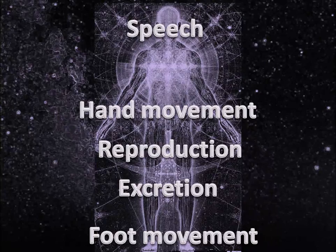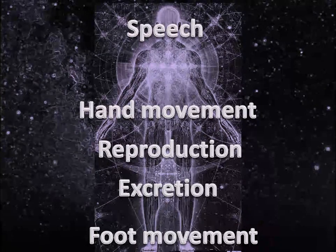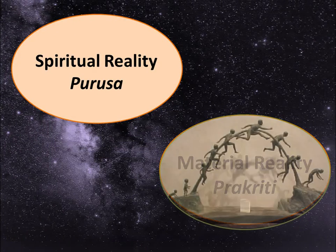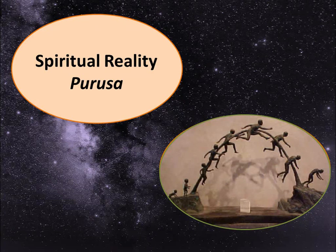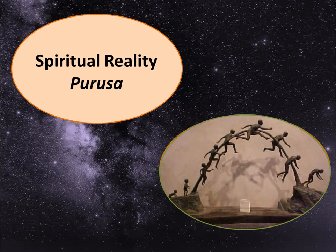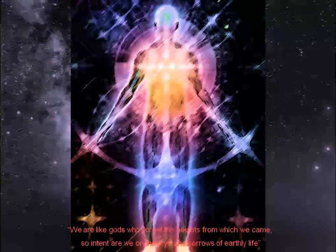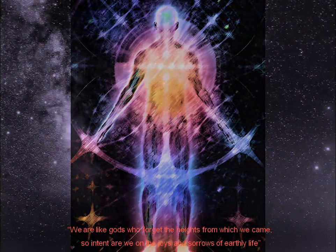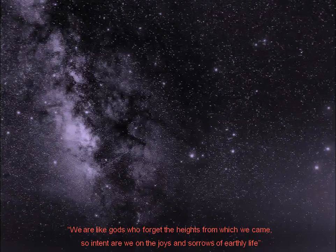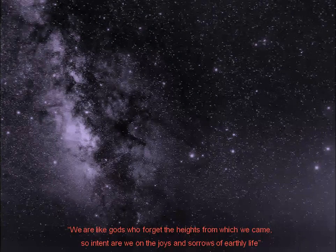There are five sense organs of action: speech, hand movement, foot movement, reproduction, and excretion. The evolution of material reality is to serve the purpose of each individual soul, or purusha. Material reality will stop only when the soul has achieved liberation. Liberation can occur when the soul attains insight into the difference between spiritual and material reality. All states of suffering are a consequence of confusing material with spiritual reality. Kapila states: we are like gods who forget the heights from which we came, so intent we are on the joys and sorrows of earthly life.